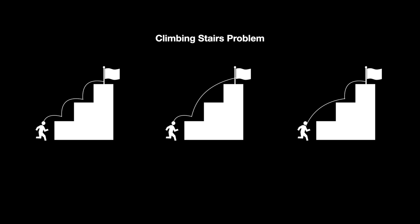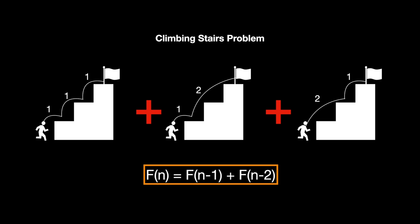Now let's get back to the climbing stairs problem. The problem was to find the distinct number of ways to get to the top of the staircase, with the constraint that you can make either one or two steps at a time. This is a combinatorial problem — we need to count things — so we use the sum operation. The transition function is f(n) = f(n-1) + f(n-2), because to reach the nth stair you must come from either the previous step or the one before it.